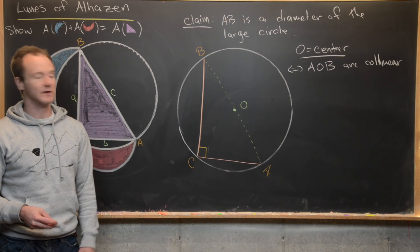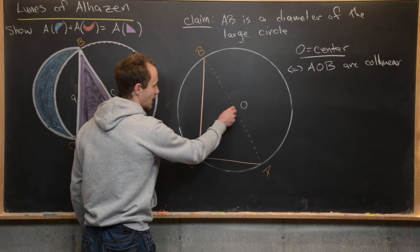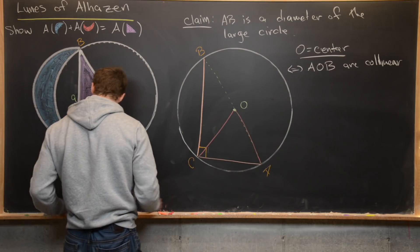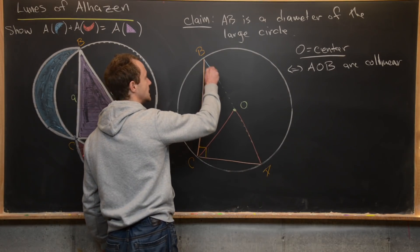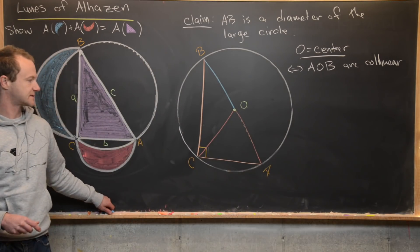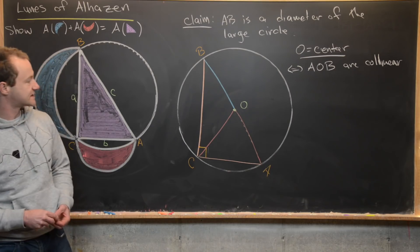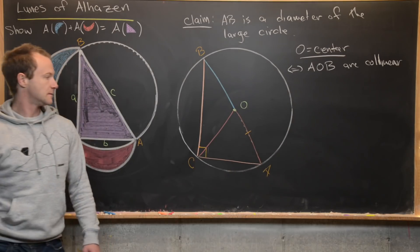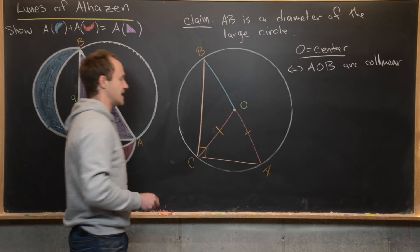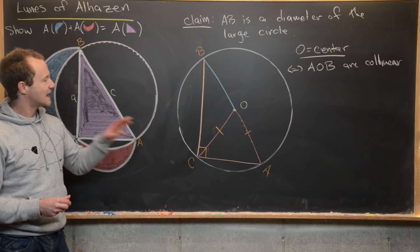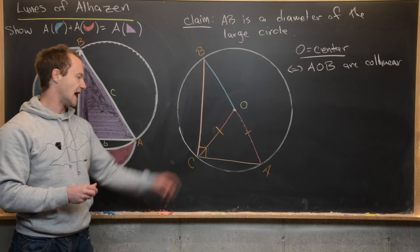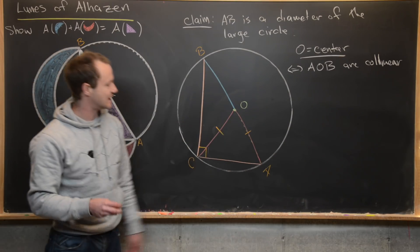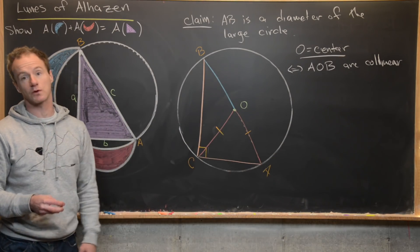We'll prove collinearity by introducing two more triangles: triangle AOC and triangle BOC. Notice that the length AO equals OC, because O is the center of the circle and A and C are both points on the circle. Remember, we're assuming O is the center but not yet assuming that A, O, and B are collinear — that's what we're trying to show.